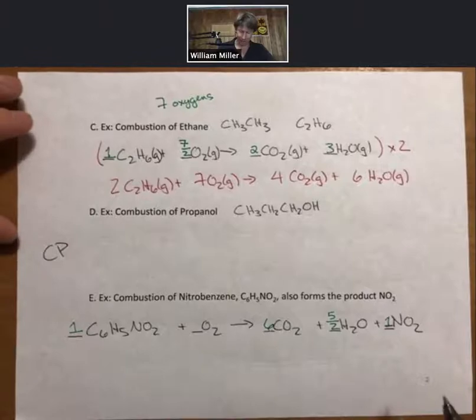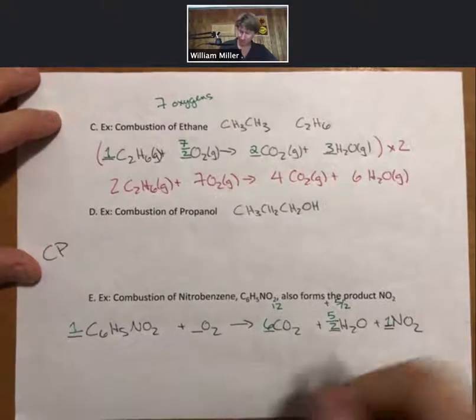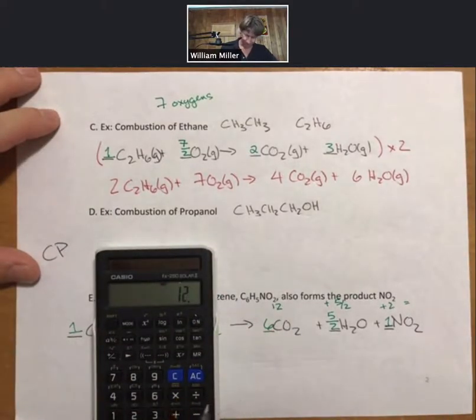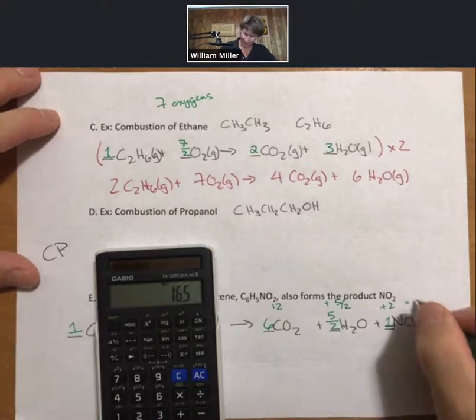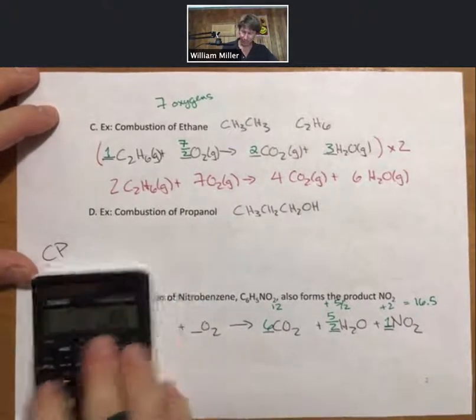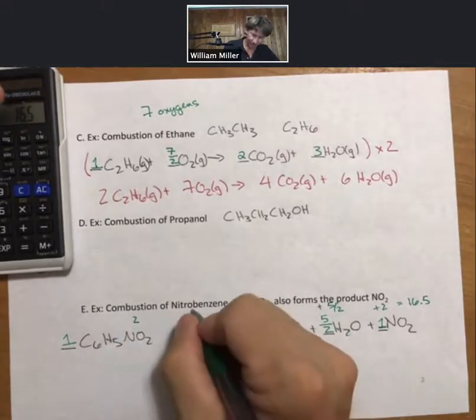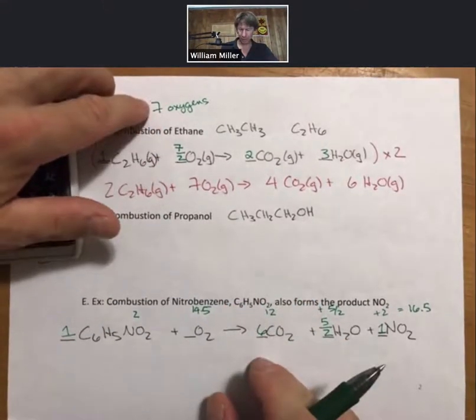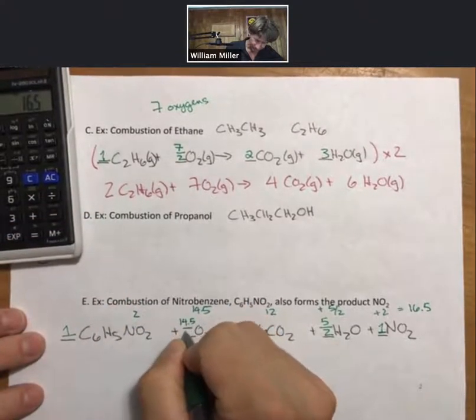And now for this one, I'm going to have to add up my oxygens. I have 12 oxygens plus five half oxygens plus two oxygens. Well, I'm always happy to get out my calculator. Plus five halves is going to be five divided by two. Plus two. I get 16.5 oxygens. That means I need 16.5 oxygens on the... Oh! I have two of them already. So I have two here. I need 14.5 oxygens here. Oxygens come two at a time. So just like in the previous example, I'm going to take whatever number of oxygens I need, divide it by two, and have it be the coefficient.